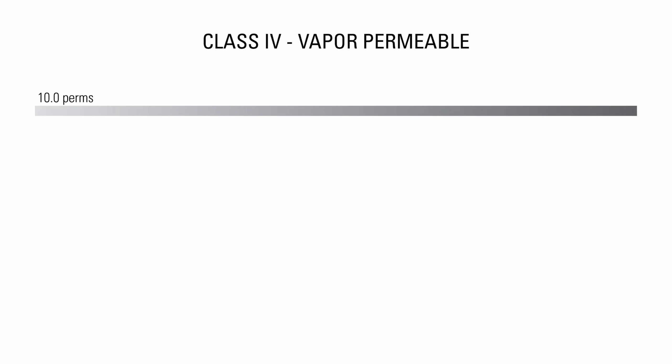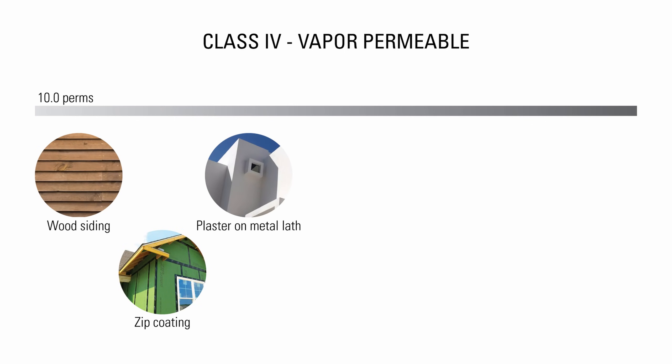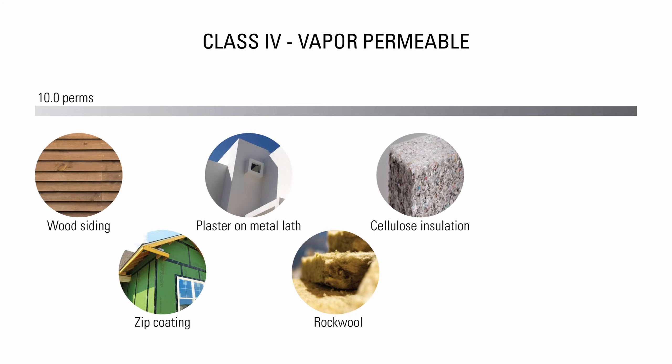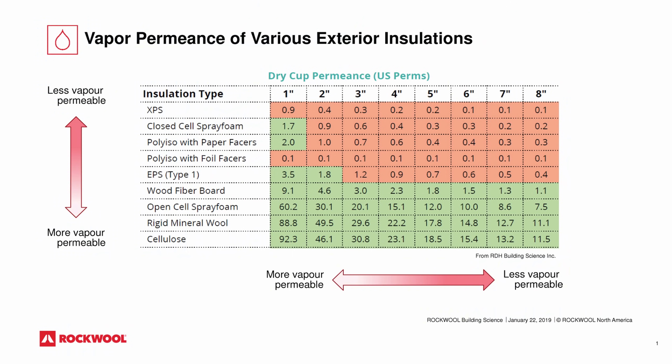The last group of materials have a perm rating of over 10. They are considered vapor permeable. They include wood siding, zip coating, plaster and metal lath, rockwool, cellulose insulation, brick and Tyvek. Rockwool has a very helpful graphic comparing the vapor permeance of various types of exterior insulation. The chart shows that XPS is the least vapor permeable and cellulose is the most vapor permeable. It also shows that vapor permeance decreases as the thickness of insulation increases, which makes sense — it's more difficult for water vapor to travel through thicker insulation materials. I'll link this chart in the description below.